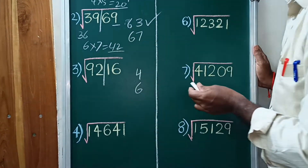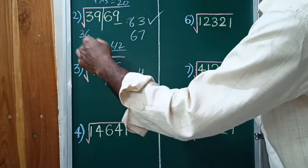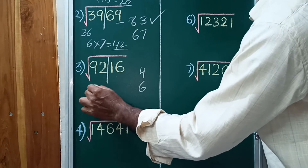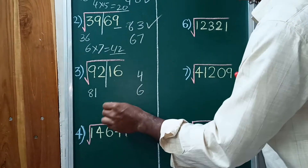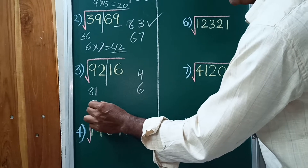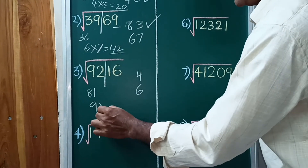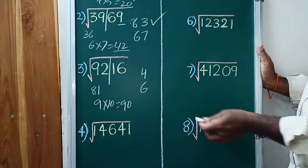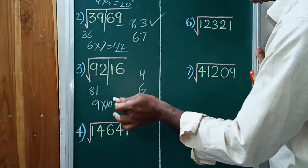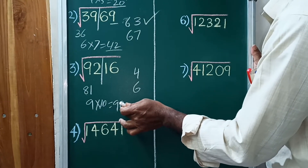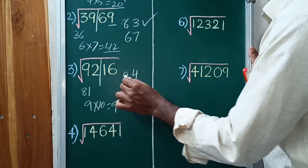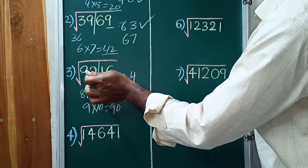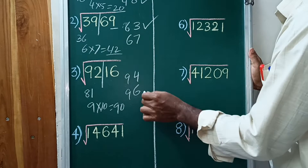Take 3 digits with slash: before the slash is 92, and the nearest square number below is 81. The square root of 81 is 9. Next number: 9 into 10 equals 90. Comparing to 92 — 92 is greater than 90. So the answer is 96, and the square root of 9216 equals 96.